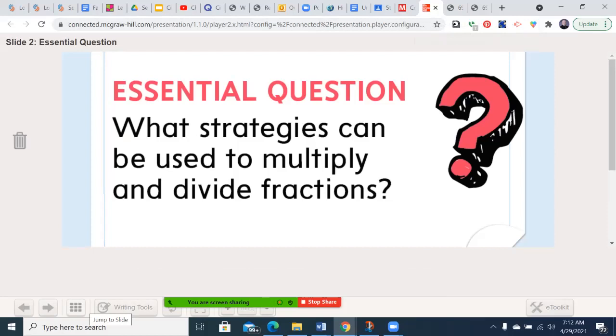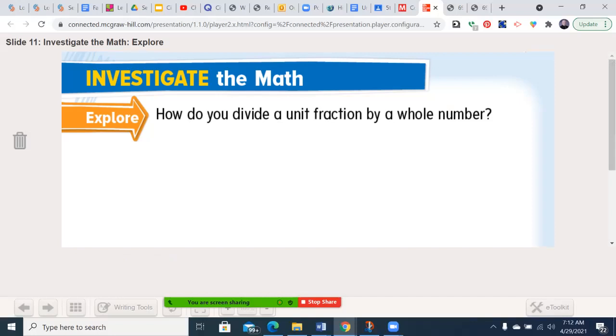Our essential question is: what strategies can be used to multiply and divide fractions? Let's begin with the part that's not in the book. How can you divide a unit fraction by a whole number? Well, if you had 1/6 divided by 2, you figure out which two things together make 1/6. One of the things I could do is say, okay, 6 times 2 is 12, so let's try with the 12s.